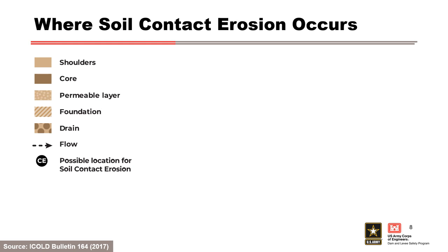Soil contact erosion may occur between any granular layer such as a filter, drain, or riprap, and fine soil in contact with that layer, where high velocity flow in the coarse soil parallel to the contact erodes the fine soil. These characteristics usually correspond to the interface between the core and a gravelly foundation.